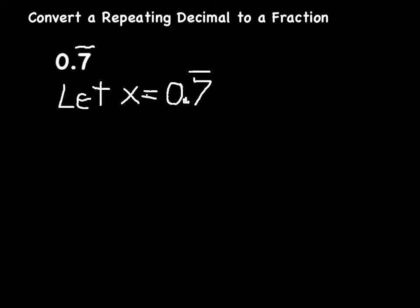If this is true, then 10 times x has to be equal to 0.7 repeating times 10, which is going to be 7.7 repeating. That's because if I multiply a number by 10, all I do is slide the decimal place over.